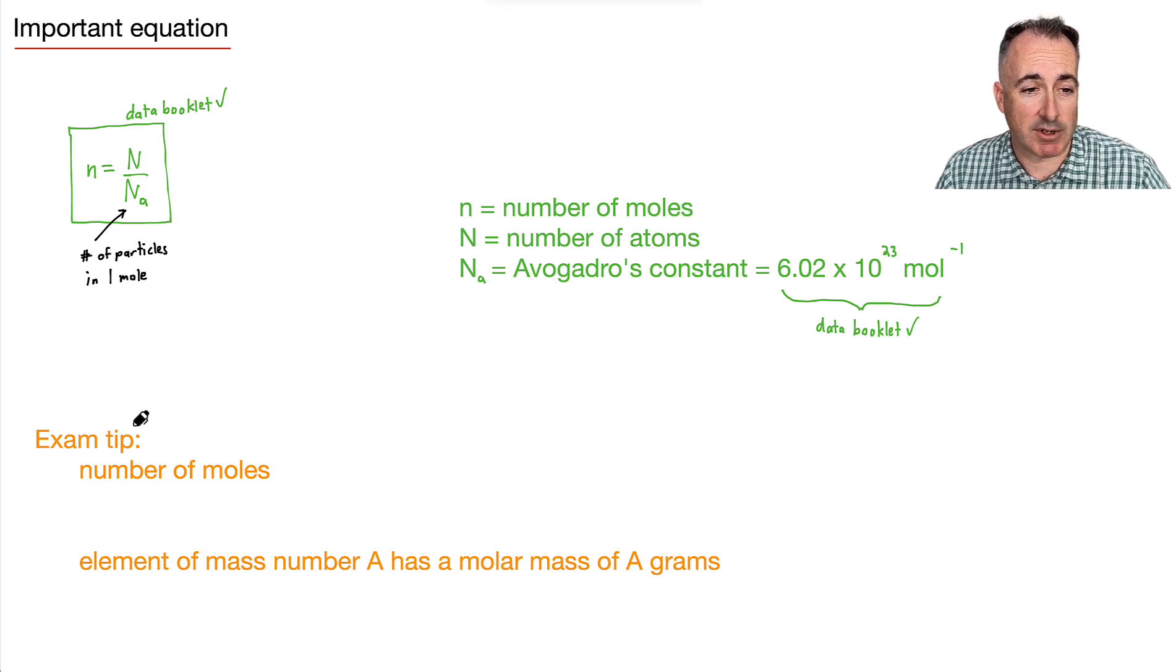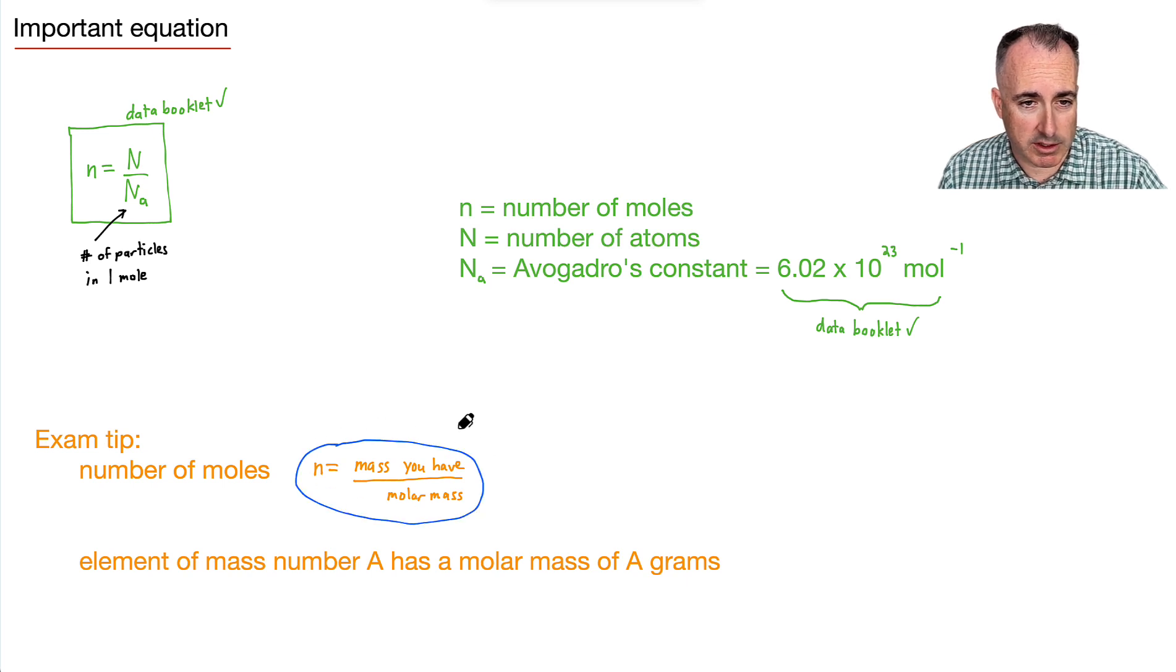I think it's important, this exam tip right here, that the number of moles, in other words n, is going to be the mass you have divided by what's called the molar mass. So this is hugely important. In fact, I think you should memorize this. There's not many equations I think you should memorize. This is one of them. It's really helpful. So what does this do for you? It tells you the number of moles, this lowercase n, is going to be the mass you have.